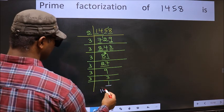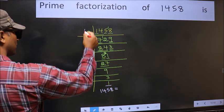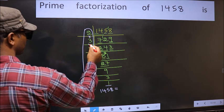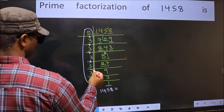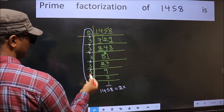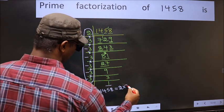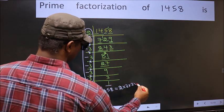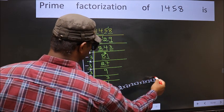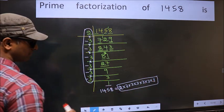So the prime factorization of 1458 is the product of these numbers. That is 2 into — how many times did we get 3? 1, 2, 3, 4, 5, 6 — into 3 into 3 into 3 into 3 into 3 into 3. This is the prime factorization of 1458.